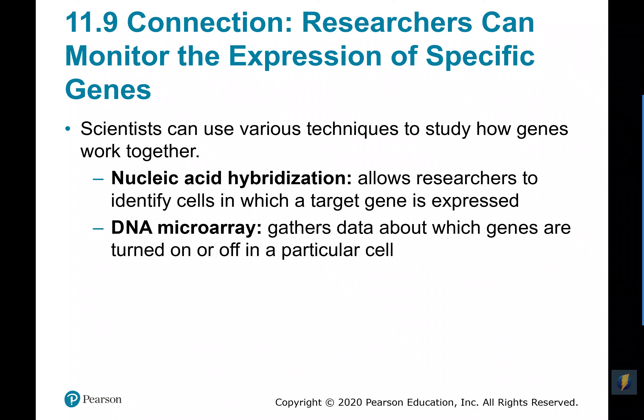We can use different science and technology to help us look at how genes work together. For instance, we can do something called nucleic acid hybridization, where we hybridize the DNA and RNA to identify cells. We can look at a target gene for some specific trait by hybridizing it with another sequence, helping us identify where genes get expressed. We can also do something called a DNA microarray, which gives us a picture of what genes have been turned on or turned off in a particular cell.